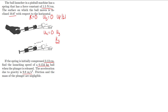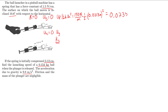The elastic potential energy is one-half k delta x squared. The force constant is 1.5 newtons per centimeter, which is 150 newtons per meter. Delta x is 3.13 centimeters, which is 0.0313 meters. So: 0.5 times 150 times 0.0313 squared gives 0.0735 joules of energy stored in the spring.